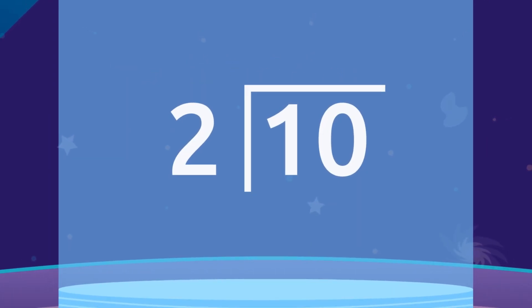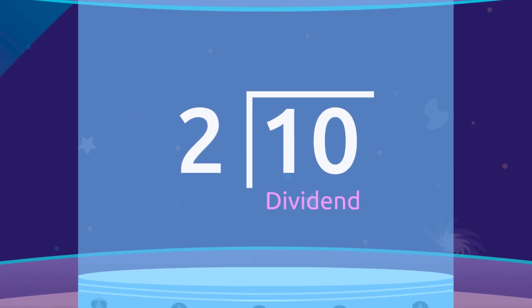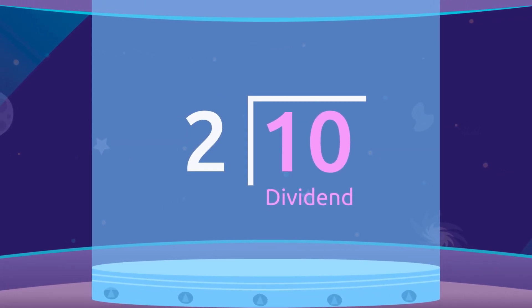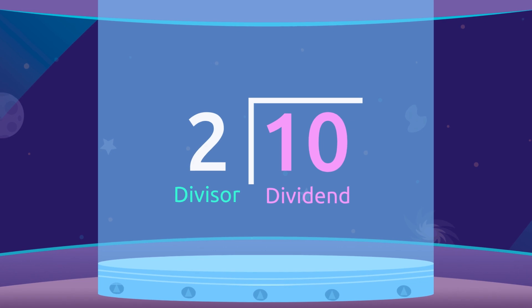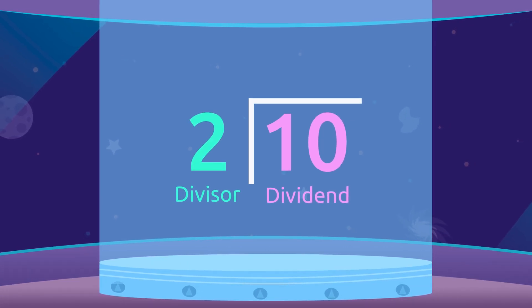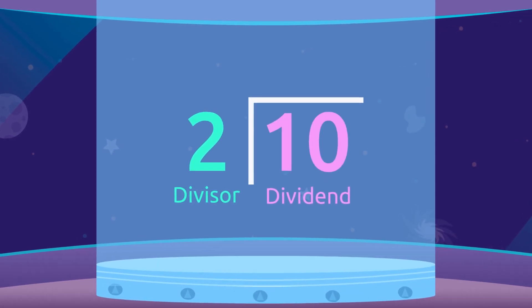When we divide a quantity, that number is called the dividend. While the number that we divide it by is called the divisor. That is, in division, we divide the dividend by the divisor.